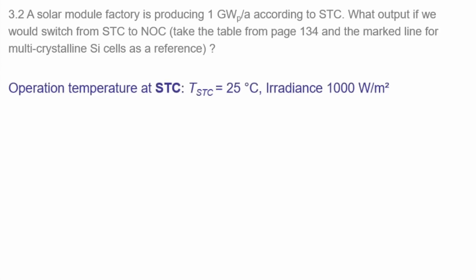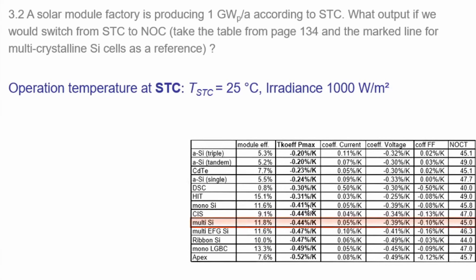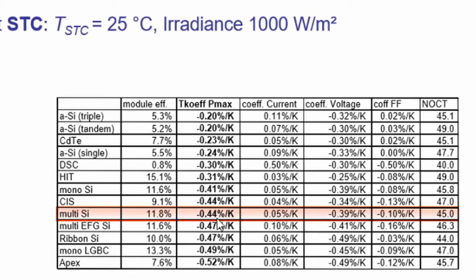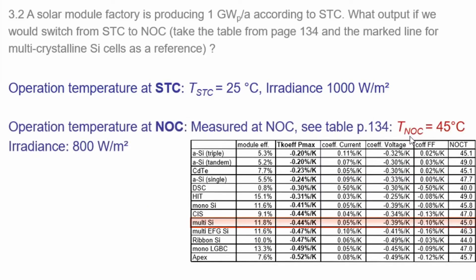As a reminder, the standard test conditions specify a cell temperature of 25°C — not outdoor temperature — and an irradiance of 1000 W/m². From the table, the temperature coefficient for power output is −0.44% per Kelvin. So for 10 degrees more temperature, we have 4.4% less power output. The NOCT compared to STC at 25°C represents an additional temperature of 20 degrees. Also, at nominal operating conditions the irradiance is not 1000 W/m² but a more realistic 800 W/m², so we lose power both from temperature and from the lower irradiance.